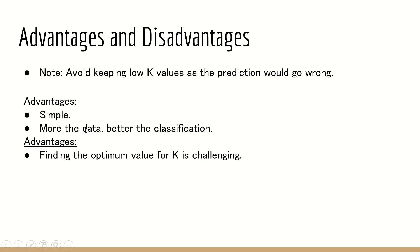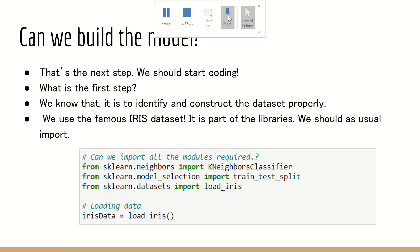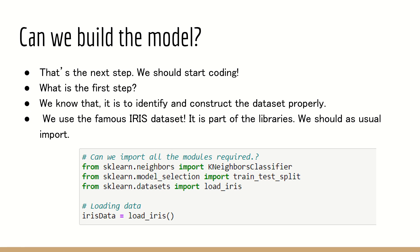You cannot keep the K value too low. If you keep K as 1, it will give you a lot of errors and may not be accurate. The advantages of KNN are that it is very simple and the more data you have, the better the accuracy. The disadvantage is that selecting the appropriate K value is a challenge. Now we are going to develop a model — we will build a system which can classify new entry data using the KNN algorithm.